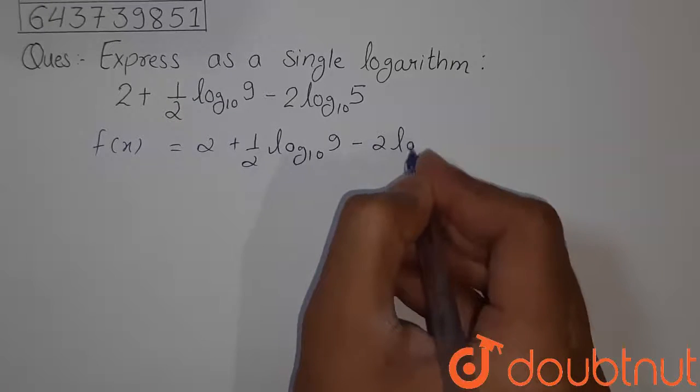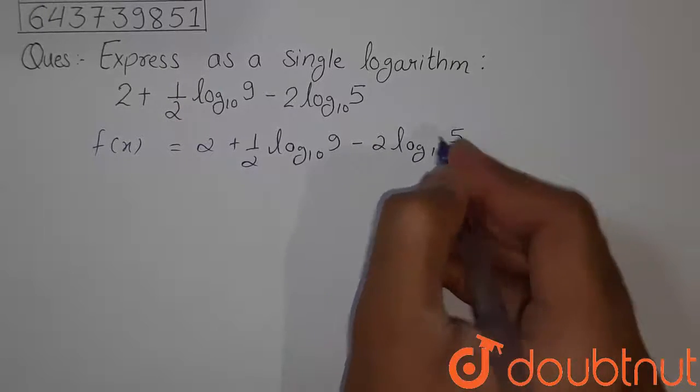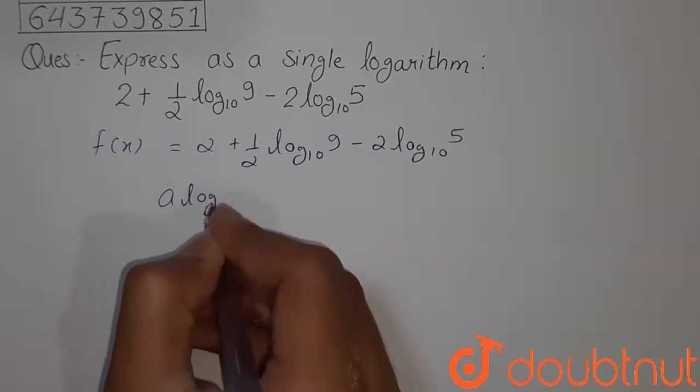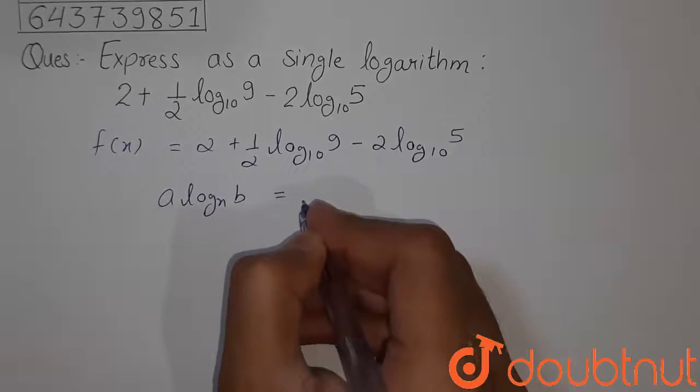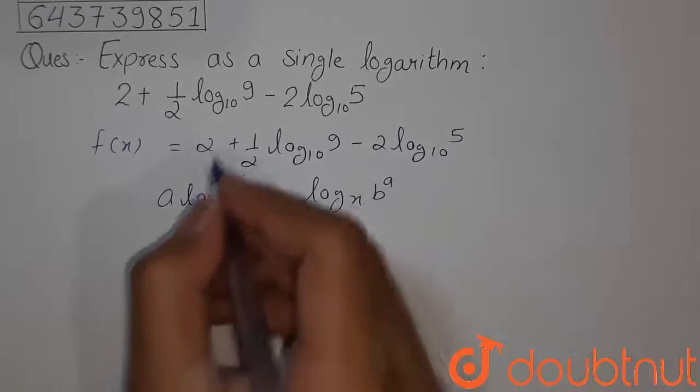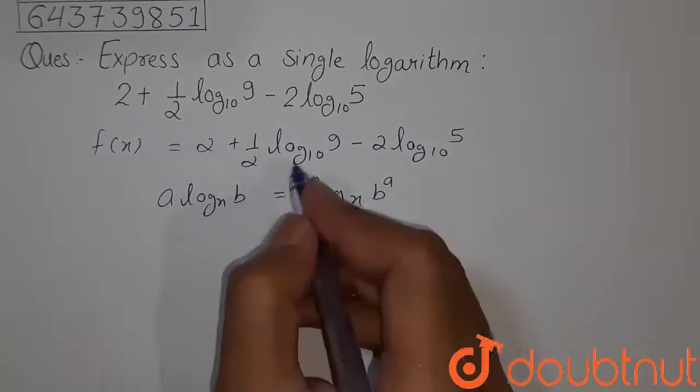9 minus 2 log to the base 10, 5. This is a property here that a log to the base x, b can be written as log to the base x, b raised to the power a. So this property may apply here and here.